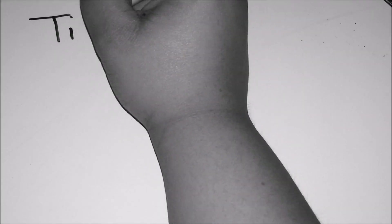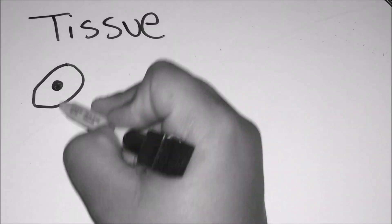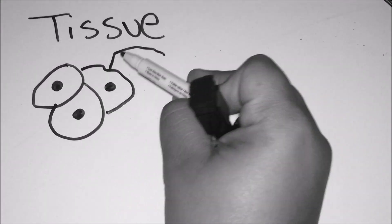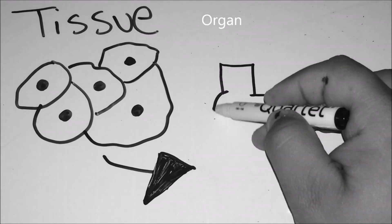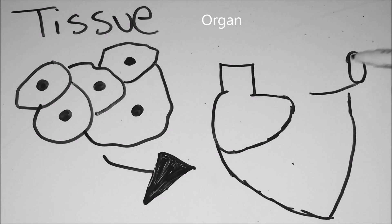The following two levels are tissues and organs. A tissue is a group of similar cells. An example of a tissue are skin or cells that make up your heart. The next level is composed of tissues that create an organ such as your heart.